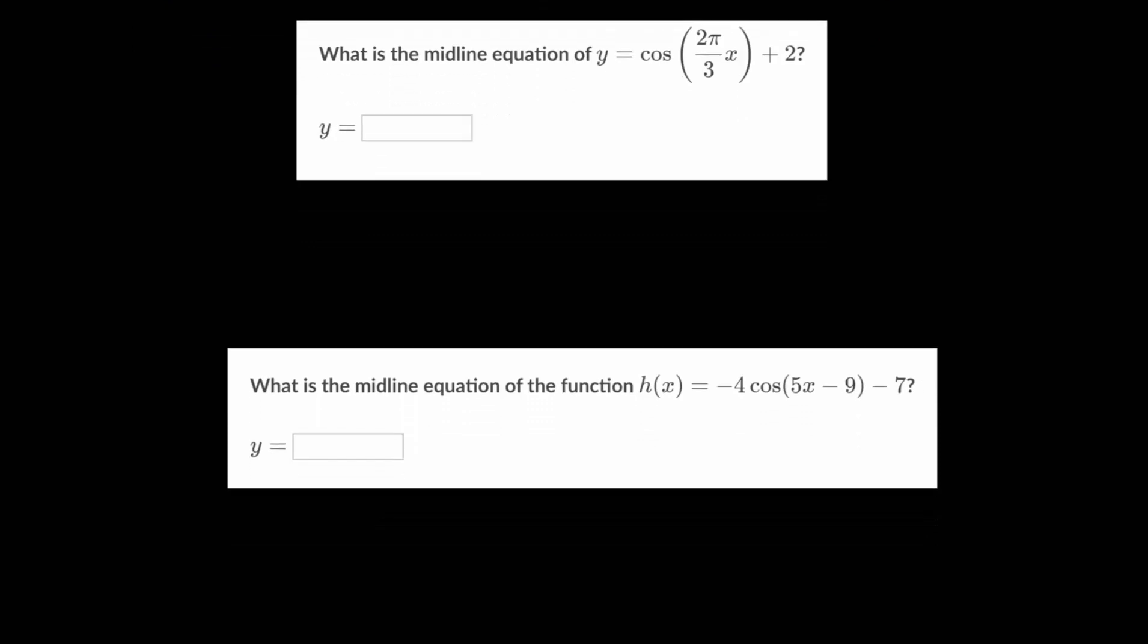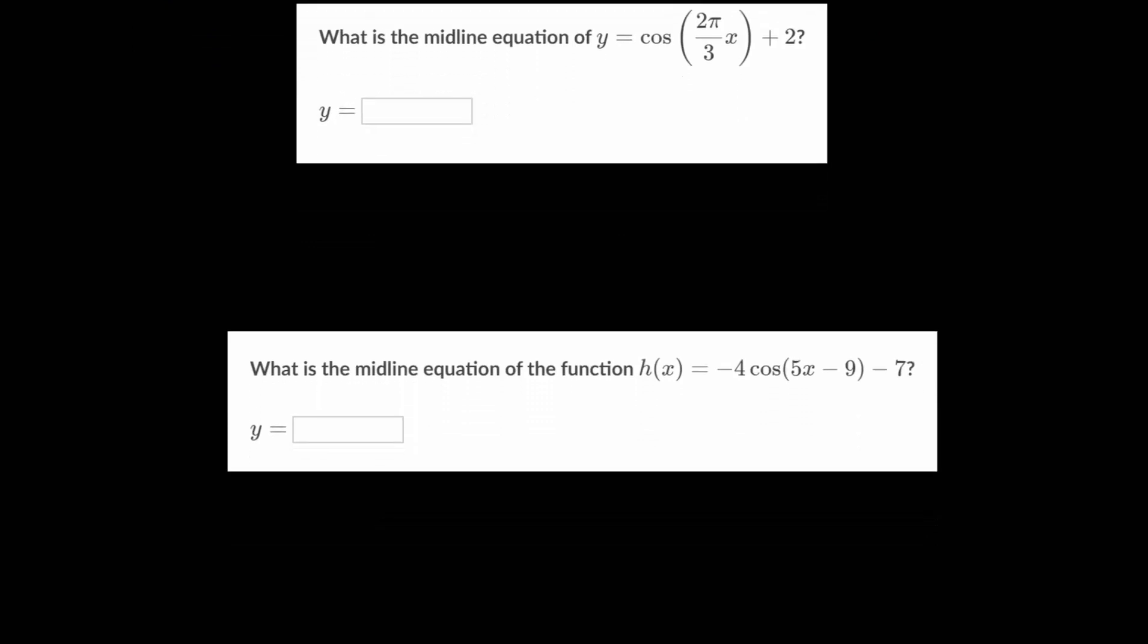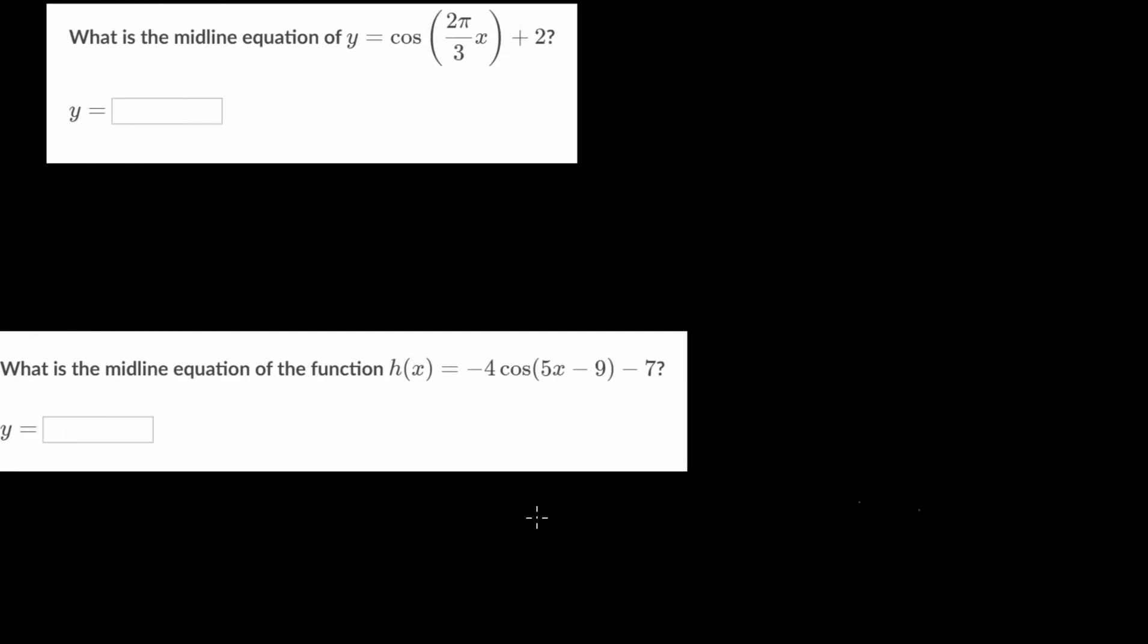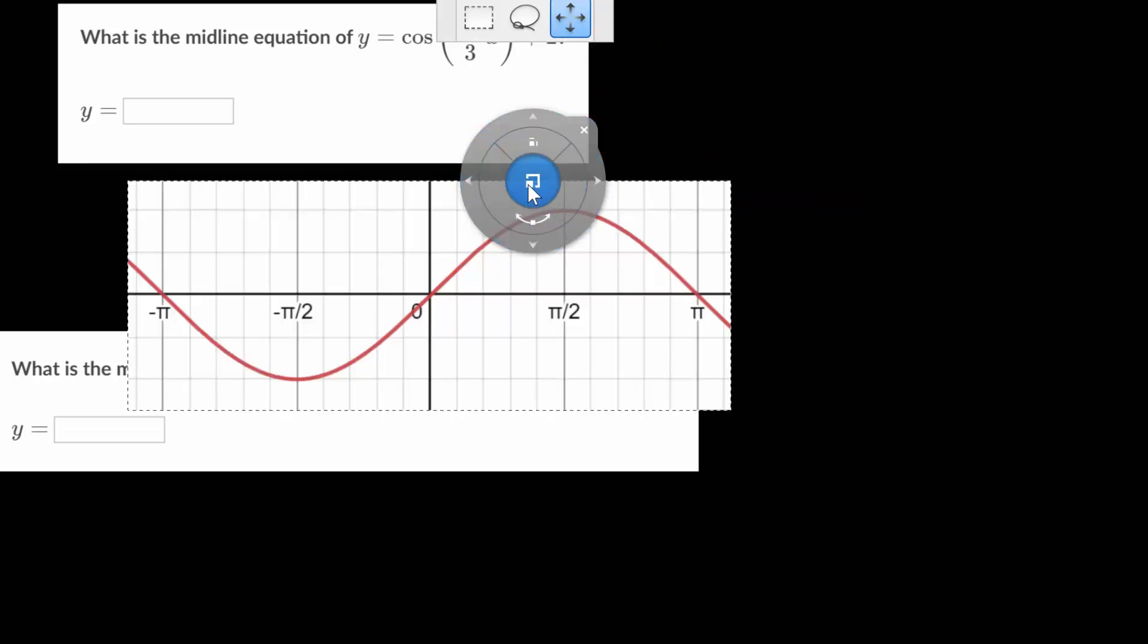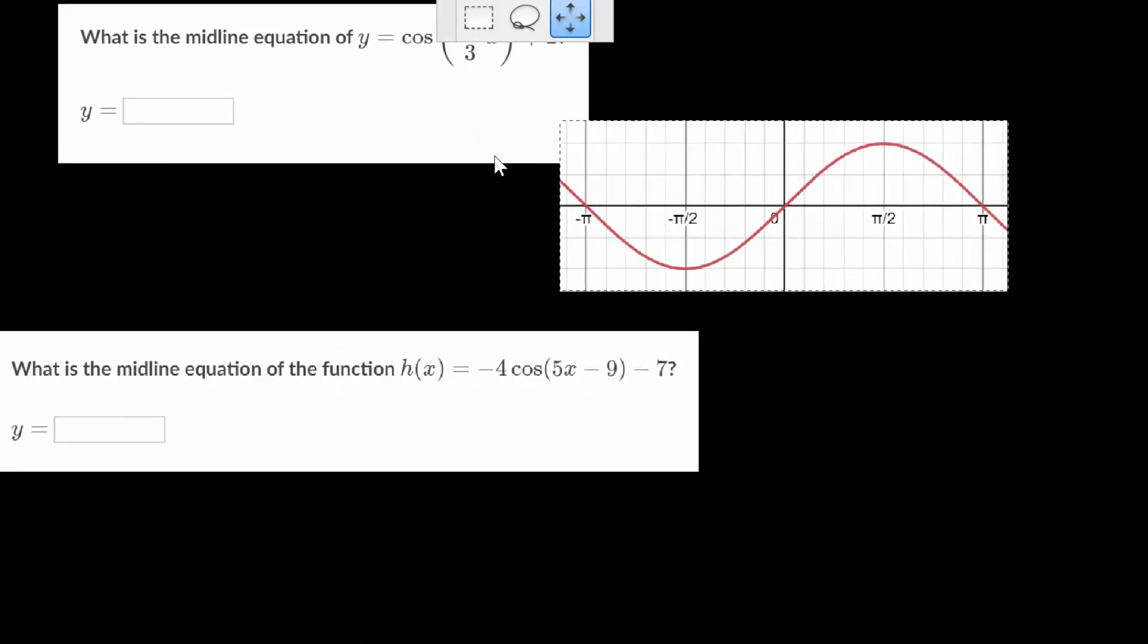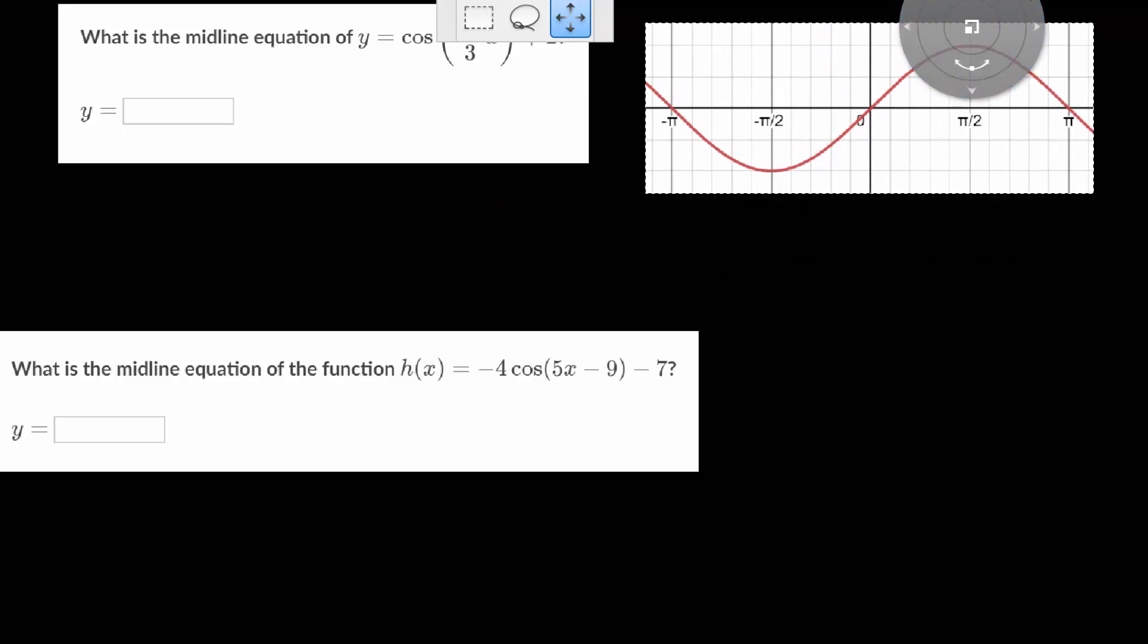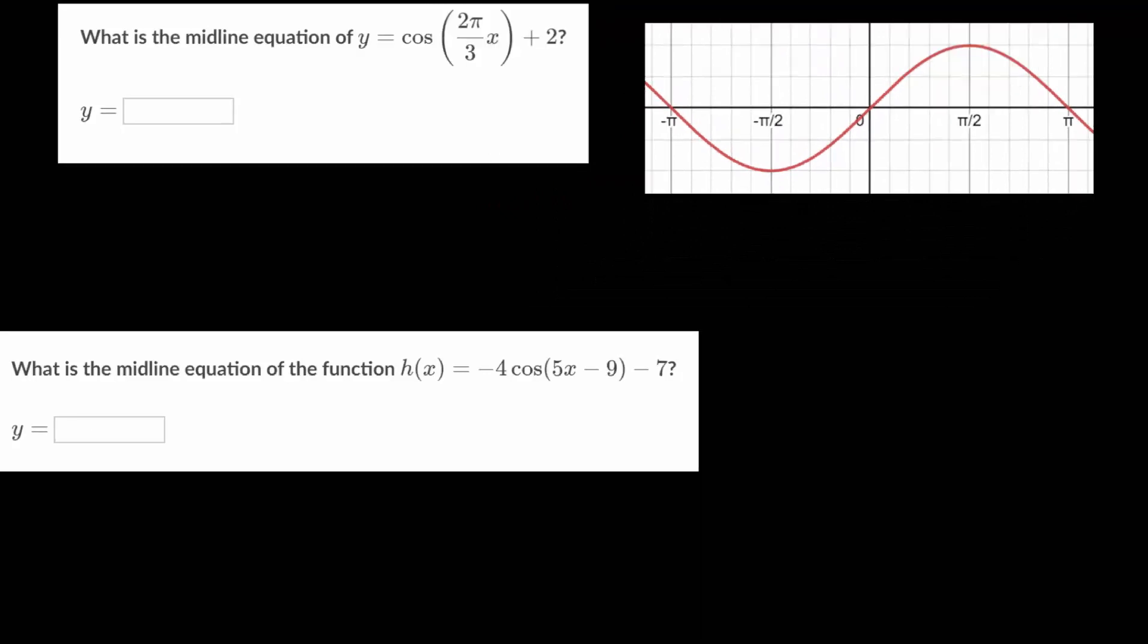Before we consider these specific example problems, let's remind ourselves what we learned in a previous video involving the midline of these sinusoidal functions. We will do that by looking at the parent functions for the sine and the cosine. This graph right here is y equals the sine of some angle x, where the amplitude of this function is just one.